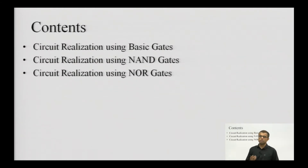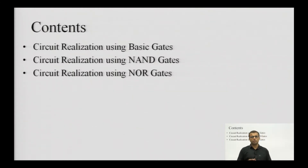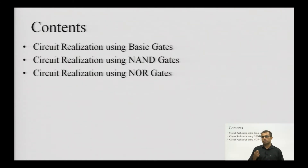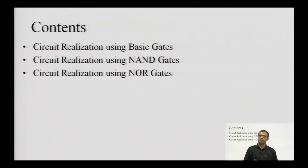In our previous lecture, we have already seen how to minimize Boolean expressions. We first covered minimization using Boolean laws, then Boolean expression minimization using Karnaugh maps, and then the third method, the tabulation method. All these three methods provide a minimized expression. Now, that minimized expression has to be converted into a circuit for practical implementation.